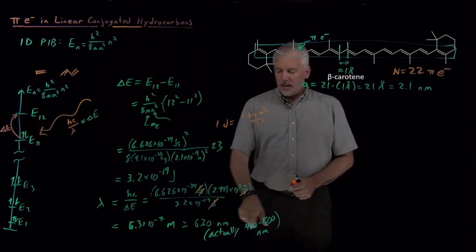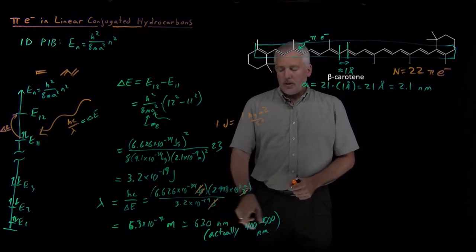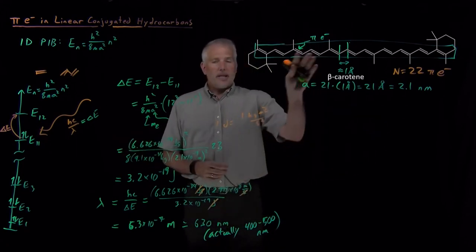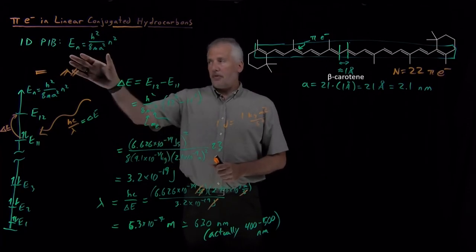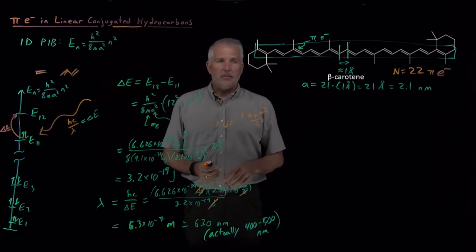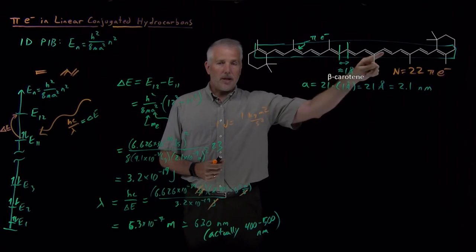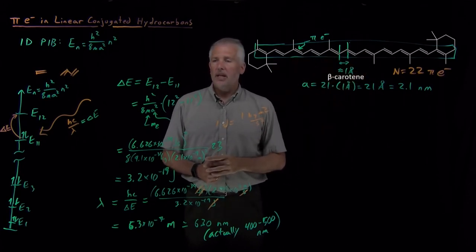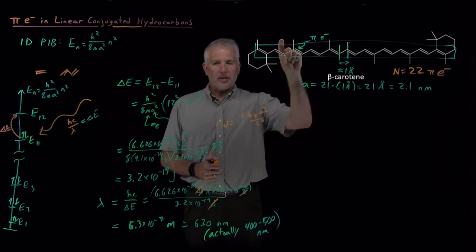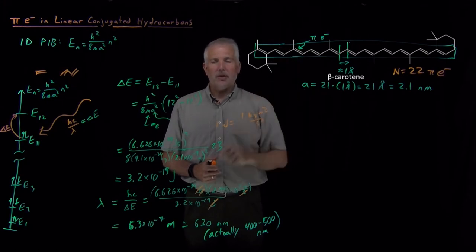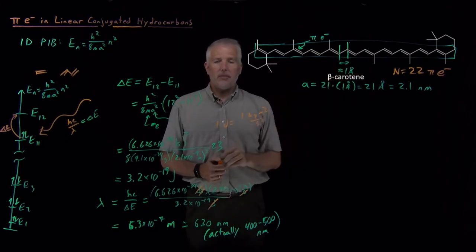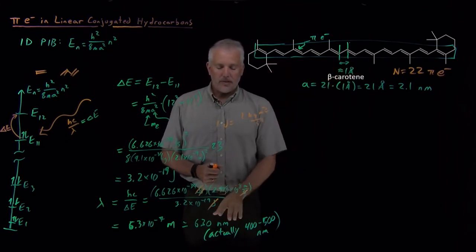So we can see that this roughly 20% or 30% error in the calculation, that's because the beta carotene molecule is actually not perfectly a particle-in-a-box. The potential energy is not zero along the backbone. There's a slight preference for being some places along the backbone than others. It's not perfectly one-dimensional. The box has some two-dimensional or three-dimensional character to it. So the particle-in-a-box model isn't perfect, but it's good enough to give at least a rough estimate.